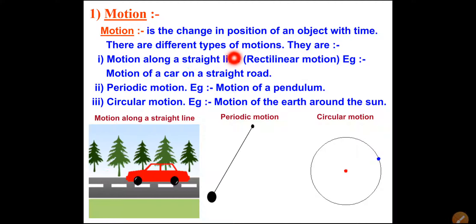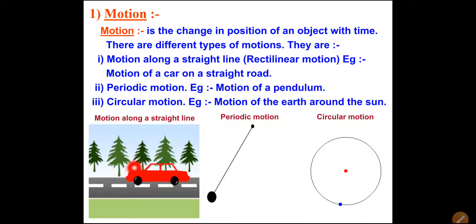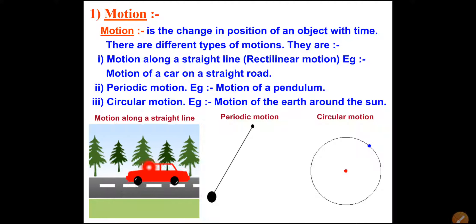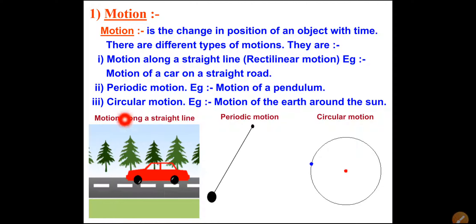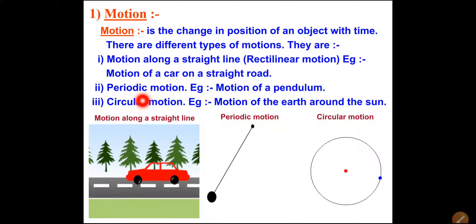Now there are different types of motion. If you see here, the car is moving along a straight line or straight road, so that is called rectilinear motion. If the motion is along a straight line, it is called rectilinear motion. An example is the motion of a car on a straight road.